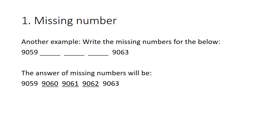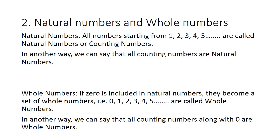Have you understood? Second: Natural Numbers and Whole Numbers. Natural numbers are numbers starting from 1, 2, 3, 4, 5, etc. These are called natural numbers or counting numbers. In another way, we can say that all counting numbers are natural numbers.